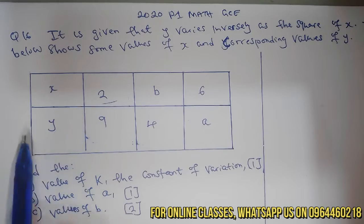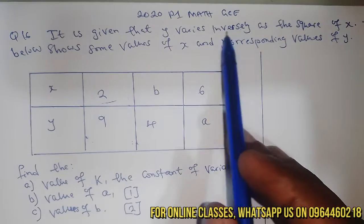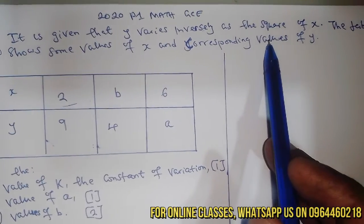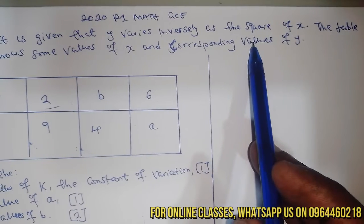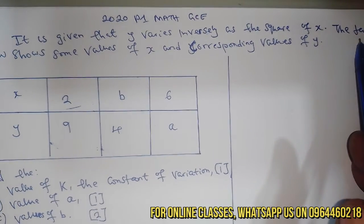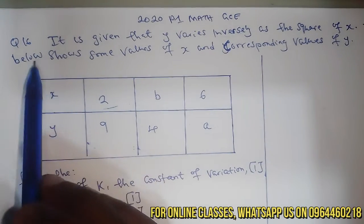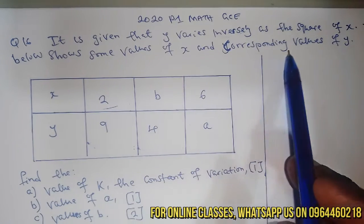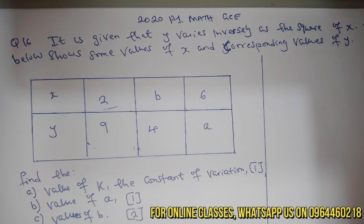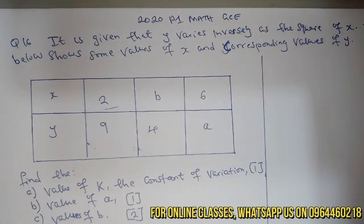Reading through the question: it is given that y varies inversely as the square of x. The table below shows some values of x and corresponding values of y.